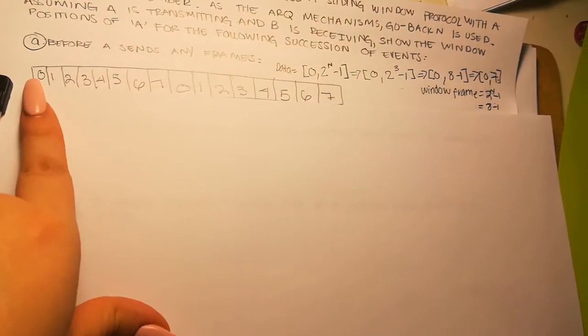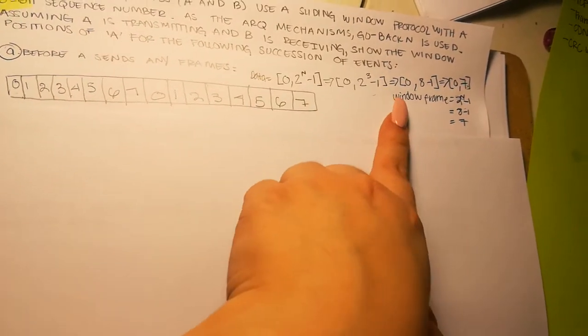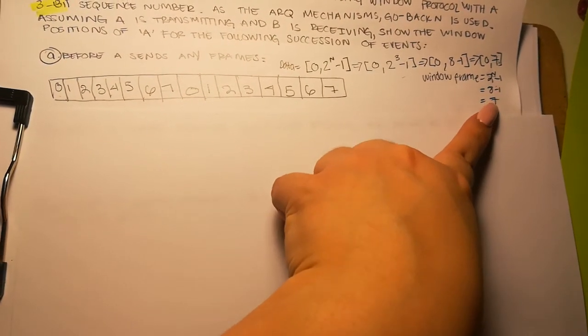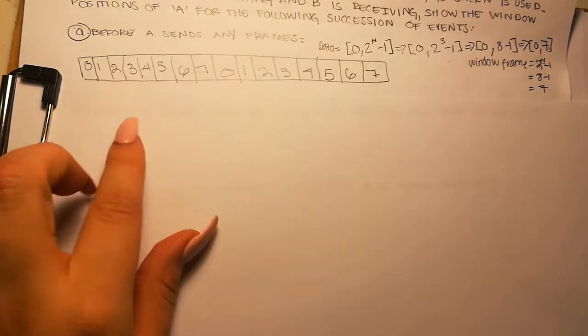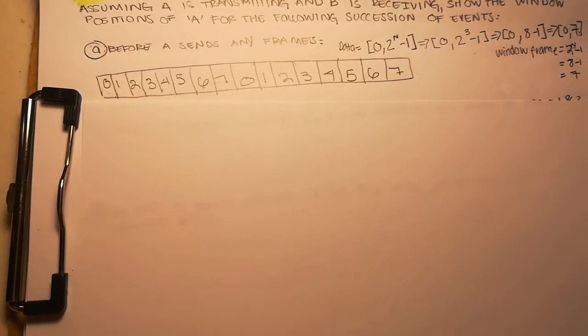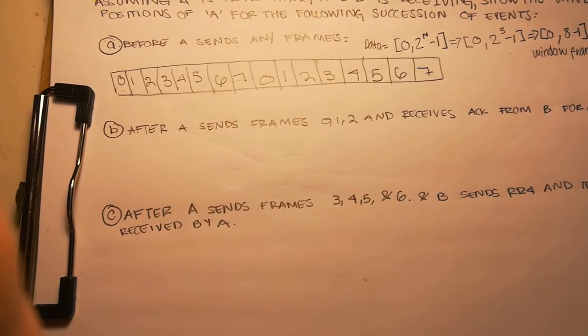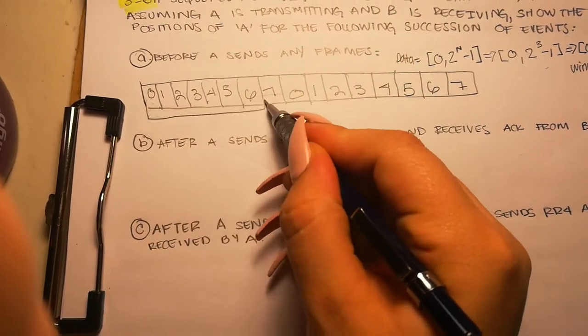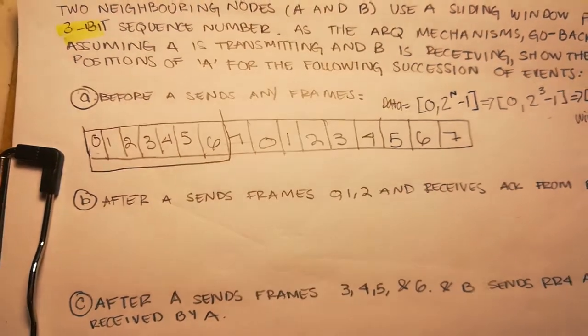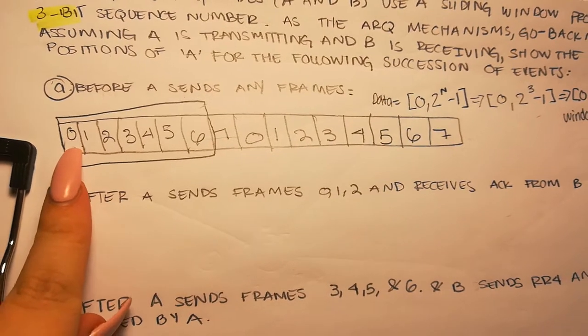So I already made my data from zero to seven, and then zero to seven again because it's going to continue sending. Now the frame size is going to be 2^n minus 1, which is seven. So we're going to have seven spots. From zero to six is going to be your window. Before A sends any data, what's going to be your data and what's going to be your window?